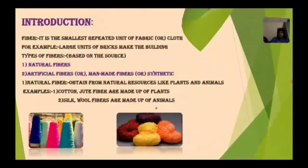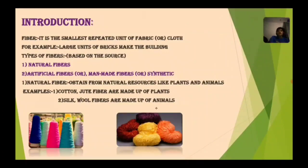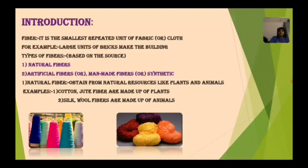First is introduction. In introduction, let us know about what is fiber. It is the smallest repeated unit of fabric or cloth. For example, large units of bricks make the building — one brick combines to form a building. Types of fibers are based on the source: one is natural fibers, that means comes from nature, and the other is artificial fiber or man-made fiber or synthetic fiber.